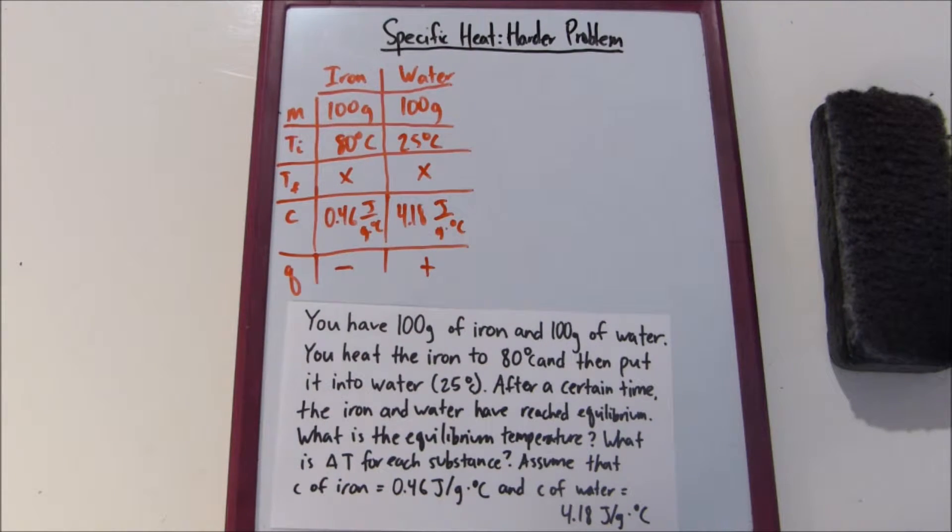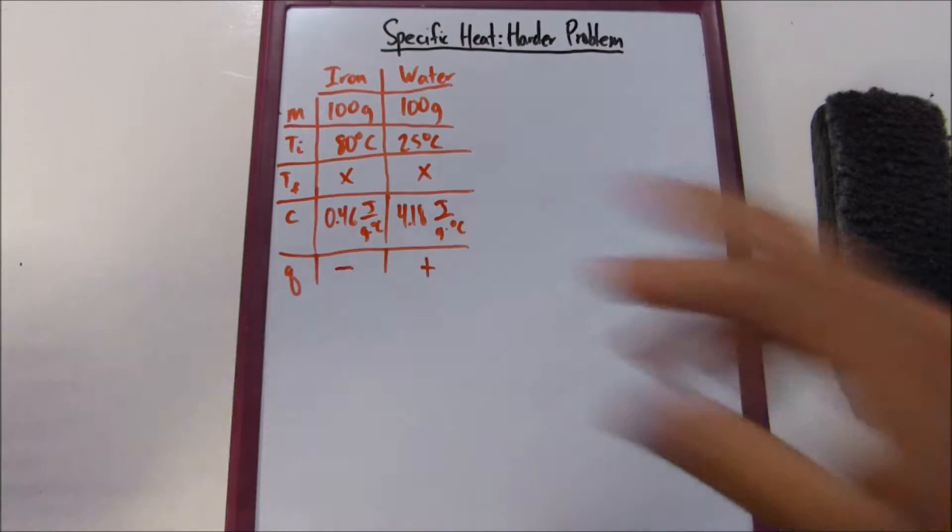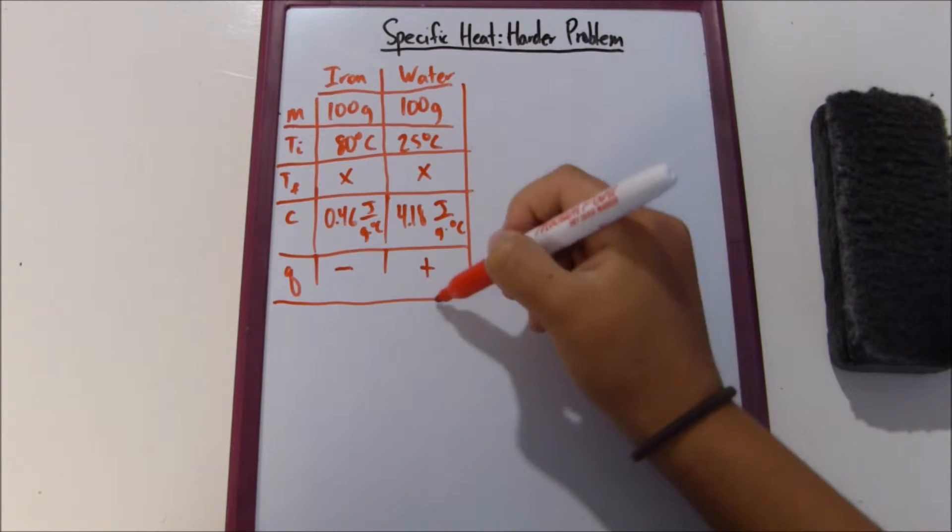So typically when you have something hotter interact with something cooler, the cooler thing is going to get hotter, and the hotter thing is going to get cooler. So now we don't need this. So we've got our nifty little table.